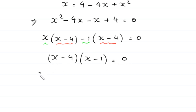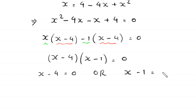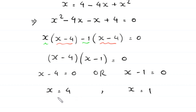From here, either (x minus 4) equals 0, giving x equals 4, or (x minus 1) equals 0, giving x equals 1. So we have two possible values of x. Now let's verify whether these are actual solutions.